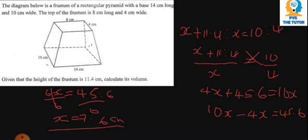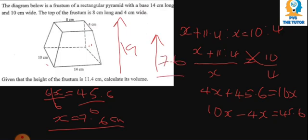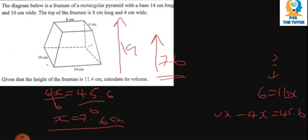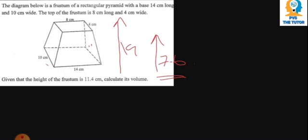So x = 7.6 cm. That means the height of the bigger pyramid is 7.6 + 11.4 = 19 cm, and the height of the smaller pyramid is just 7.6 cm. Now we know the way forward: we need to find the volume for the bigger pyramid and the volume for the smaller pyramid, then subtract.